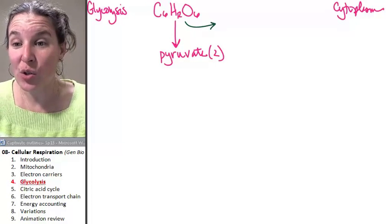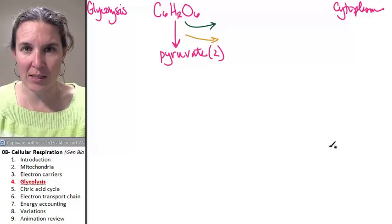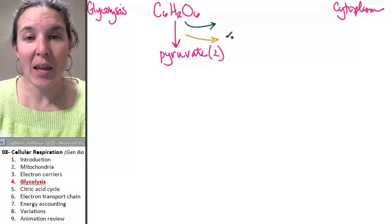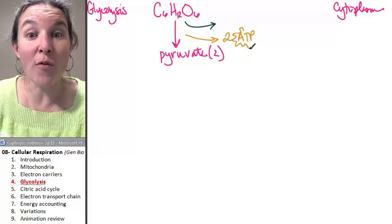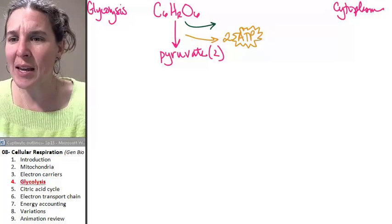We're going to keep track of two important substances. First, obviously, we're going to keep track of ATP. There are two ATP molecules that are formed in this process.